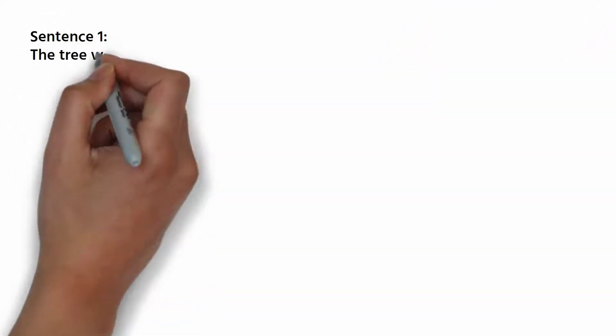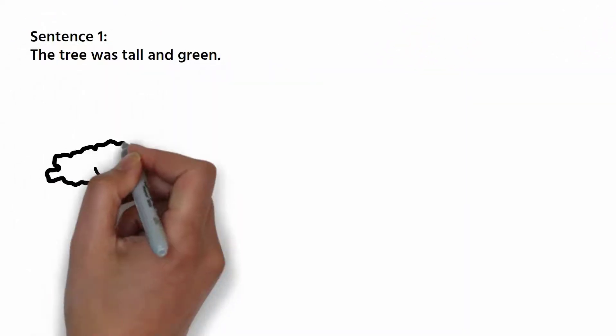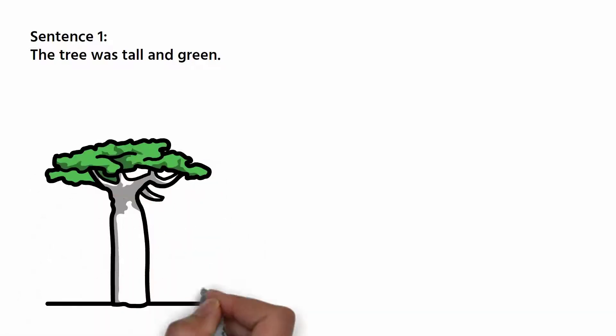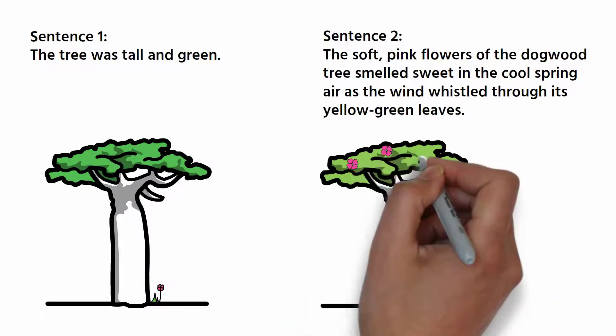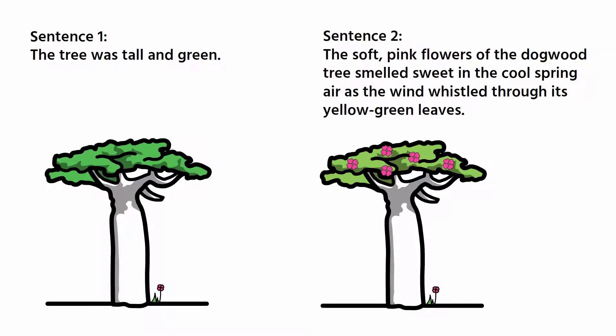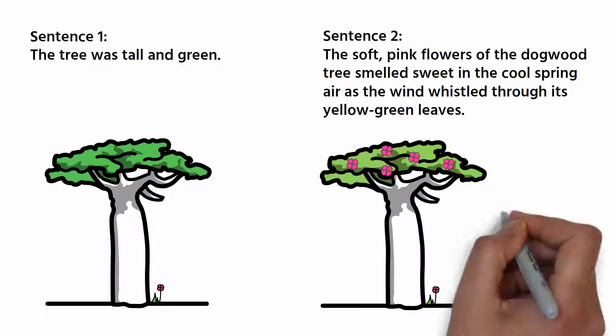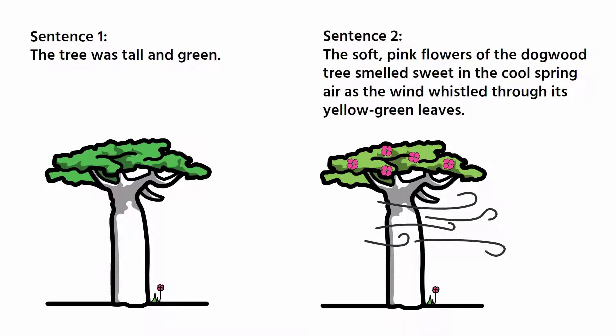For example, let's look at two sentences to see the difference. Sentence 1: The tree was tall and green. Sentence 2: The soft pink flowers of the dogwood tree smelled sweet in the cool spring air as the wind whistled through its yellow-green leaves.